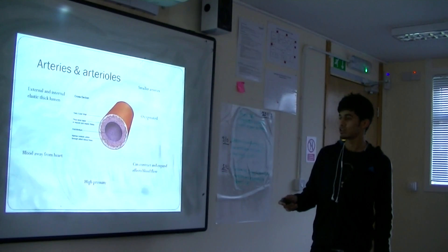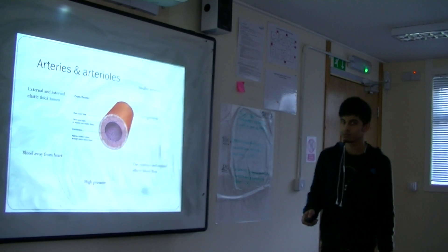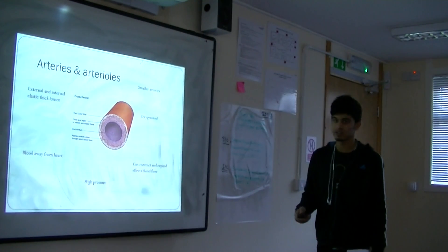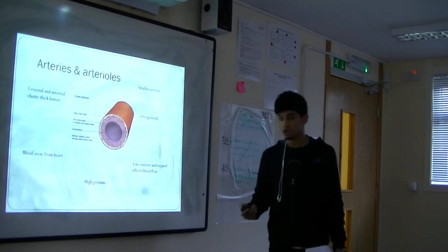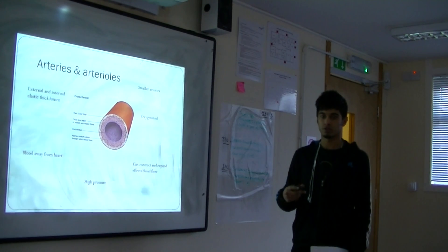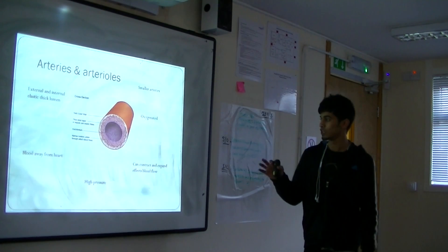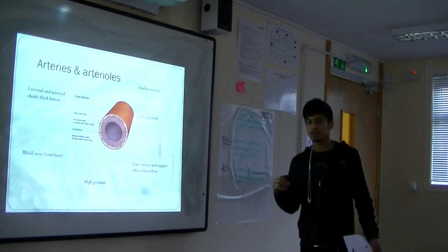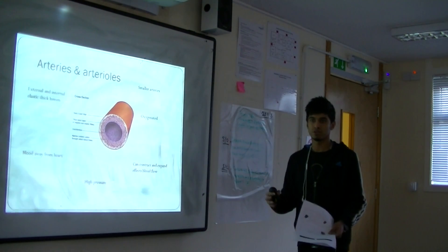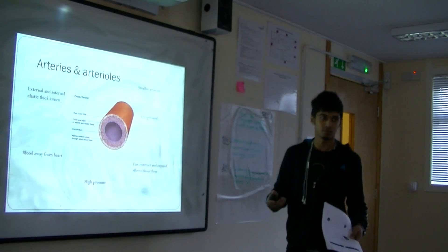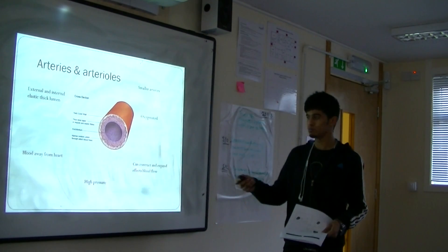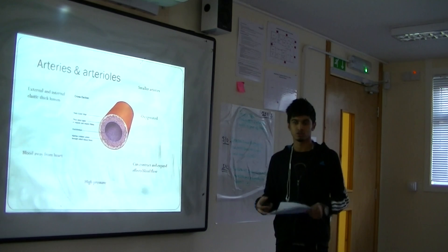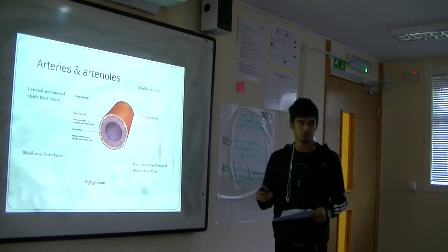There are smaller arteries called arterioles, and they contract and expand, which regulates blood flow — when they contract, there is less blood flow; when they expand, there is more blood flow. This is shown through vasoconstriction and vasodilation.